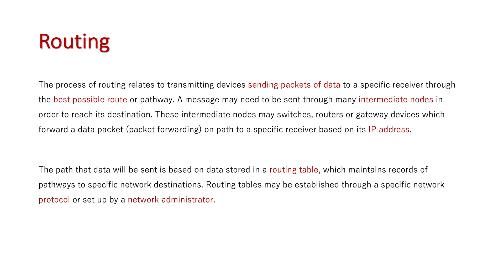These intermediate nodes may be switches, routers, or gateway devices which forward a data packet — a term known as packet forwarding — onto a path to the specific receiver based on its IP address. The path the data will be sent is based on the data stored in a routing table, which maintains records of pathways to specific network destinations.